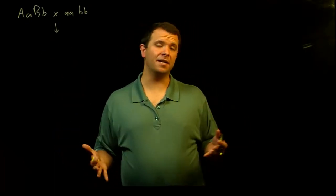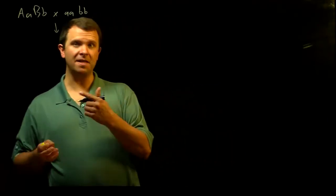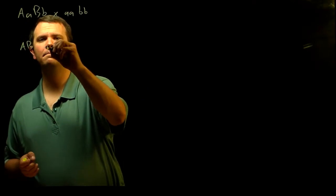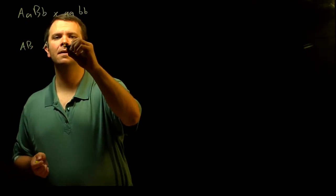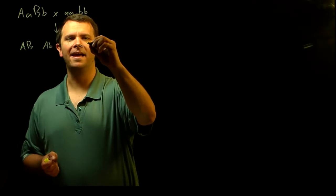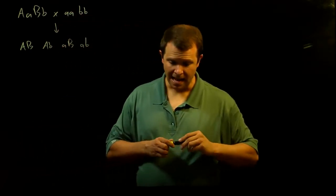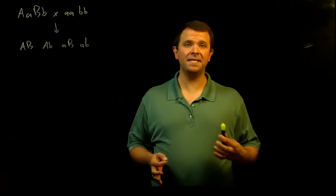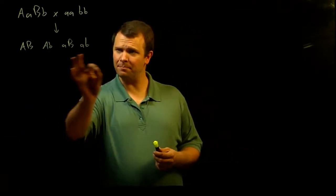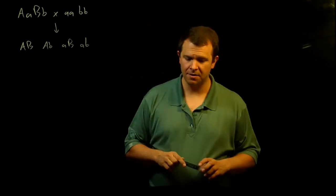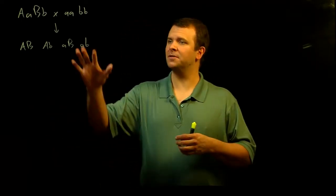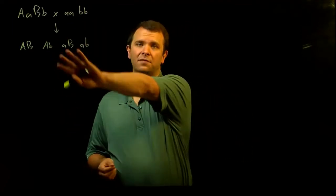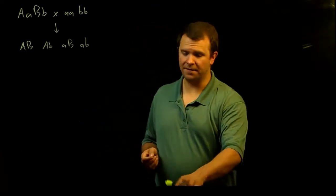And so the progeny that we expect to see, the phenotypes of these progeny, will be big A big B, big A little b, little a big B, and little a little b. If these genes A and B are unlinked, we expect to see equal numbers of all four of these progeny. Equal numbers of these gametes, and so equal numbers of the phenotypes that are reflected in the progeny of the test cross.